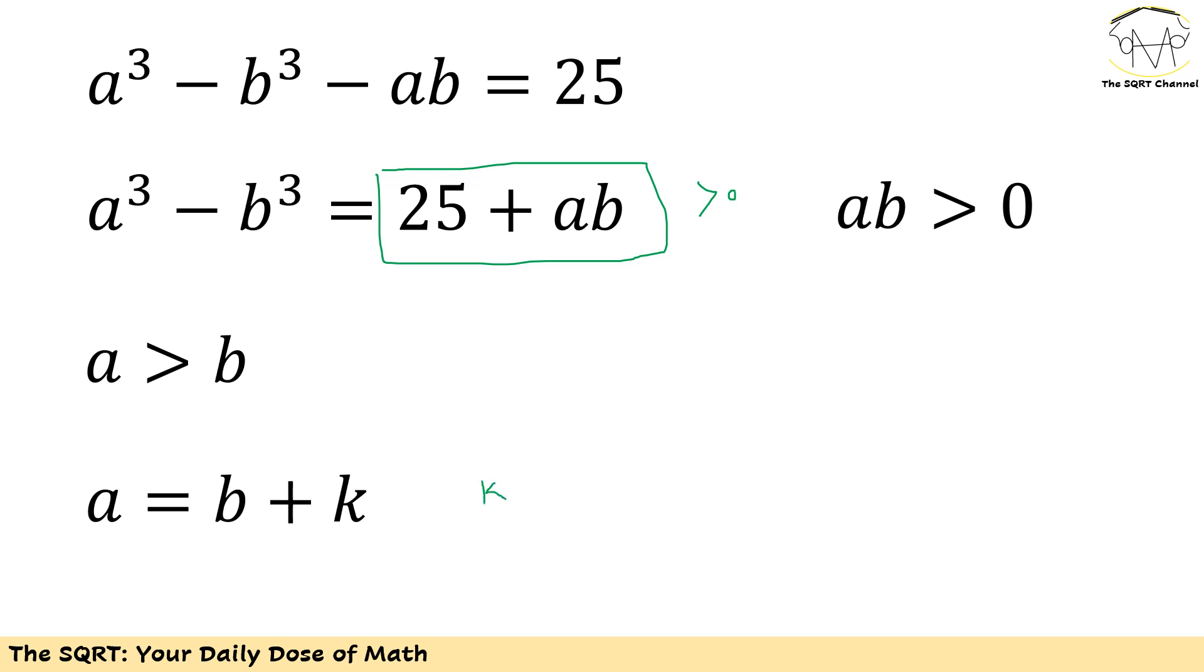I'm going to use a equals b plus k here. k is a positive value or a positive integer. Now I'm going to replace a with this b plus k and I will take it from there.